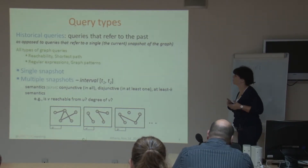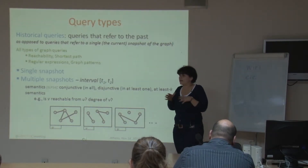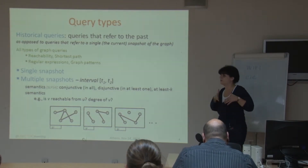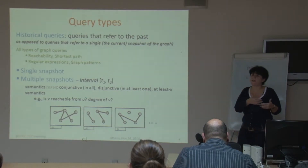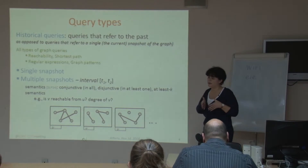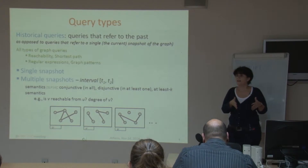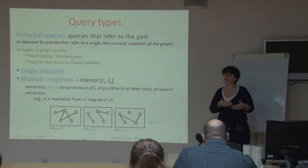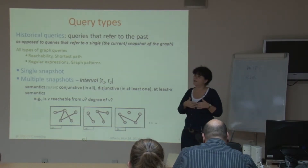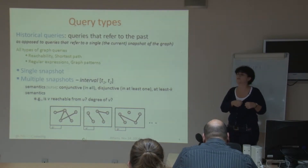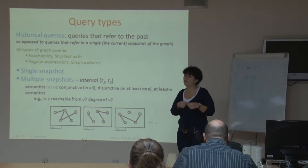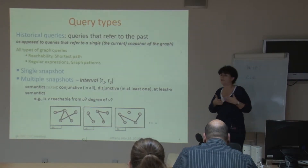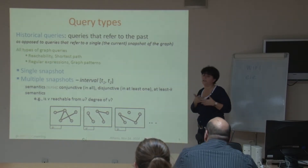We have reachability queries, shortest path queries, regular expression queries, or graph pattern queries. We can talk about two general types of queries. We have single snapshot queries, where you ask a query and want to find items that are valid during a single specific snapshot. Then we have multiple snapshot queries, which are more challenging — you want to find results that are valid through an interval. In this case, we can have different semantics. With conjunctive semantics, we want all items — edges or vertices — that are valid at all time instances in the interval.